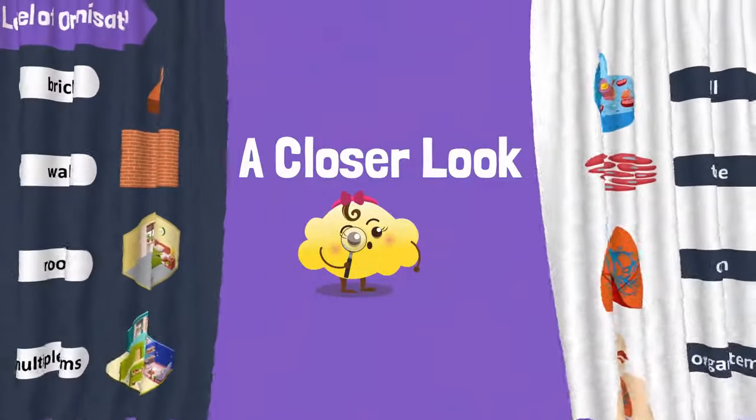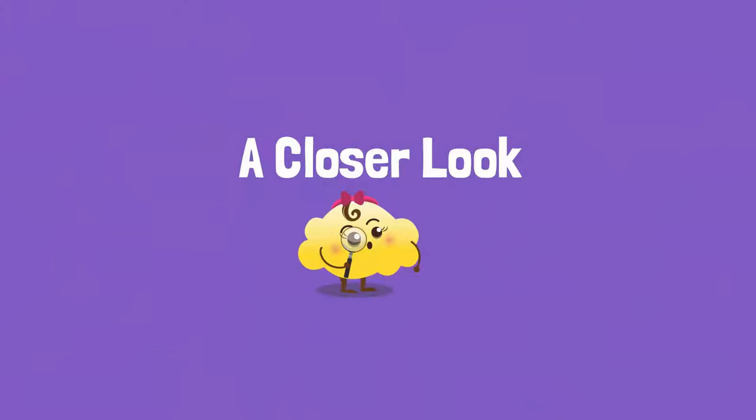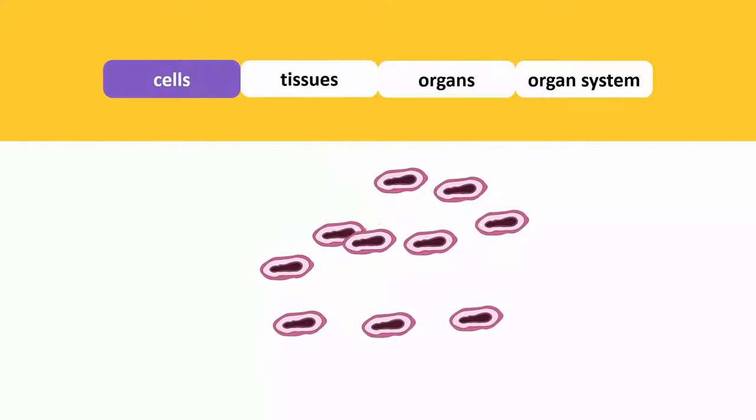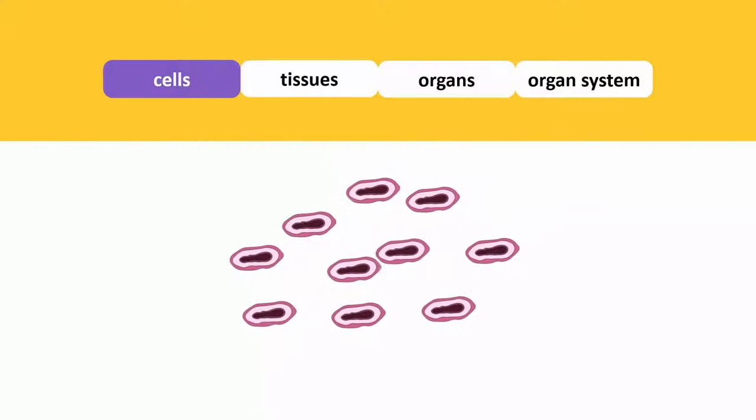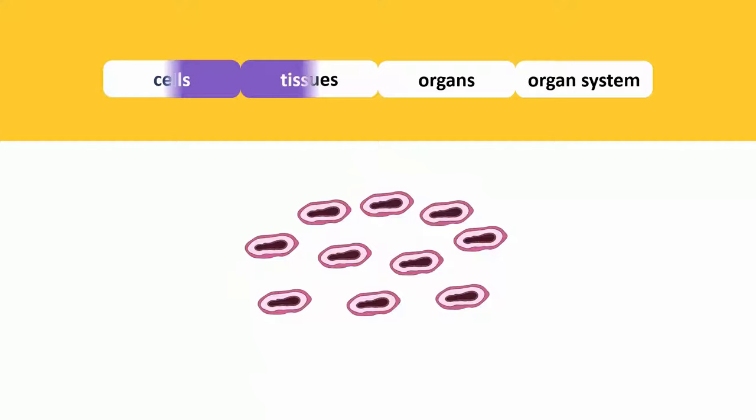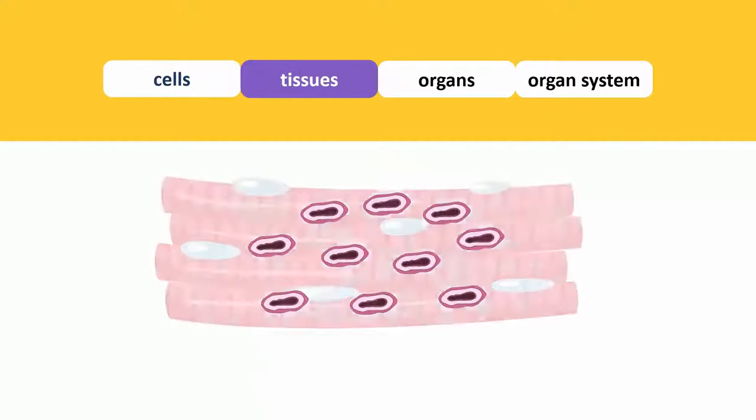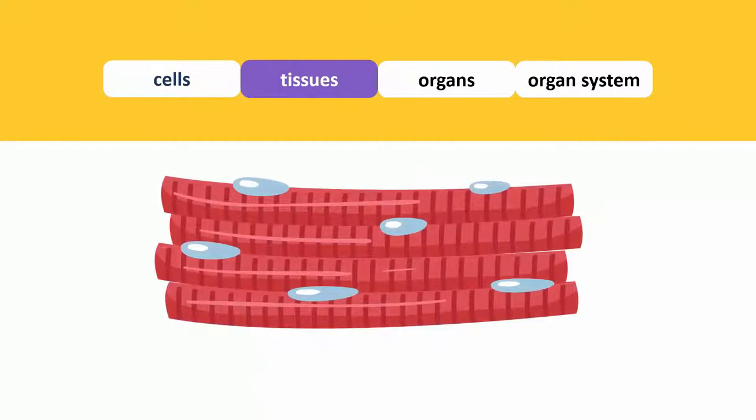Let's take a closer look at the level of organization in animals and plants with examples. Similar cells that perform the same function combine to form tissues. For example, muscle cells combine to form muscle tissues.